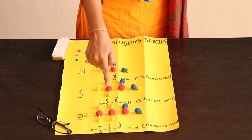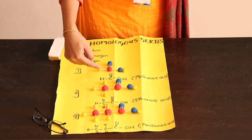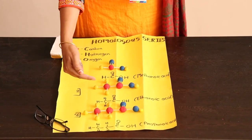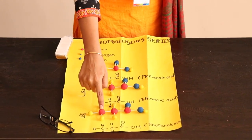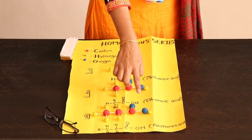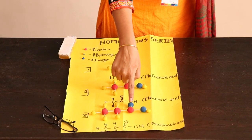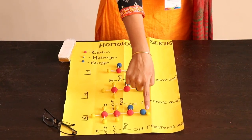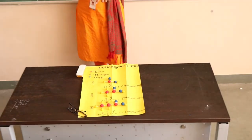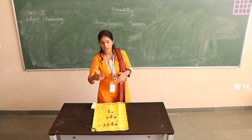The third example is propanoic acid. If we study one by one, the number of carbon atoms increases in each and every structure. In propanoic acid, there is a presence of three carbon atoms. Out of these three carbon atoms, one carbon atom is attached with the functional group — C double bond O, OH — and the other two carbon atoms are the alkane group, where two hydrogen atoms are connected.